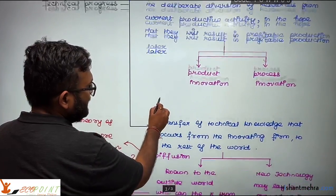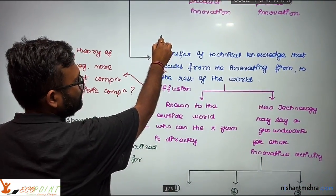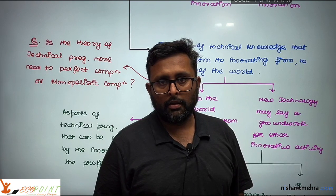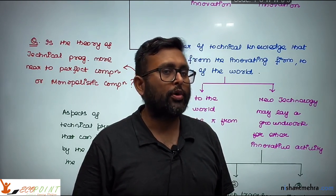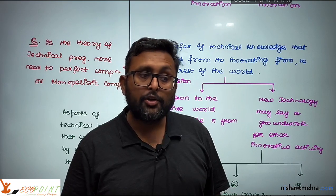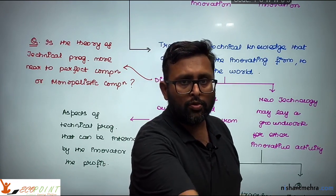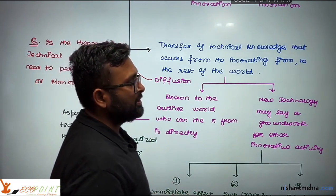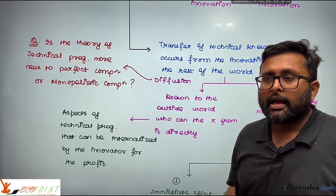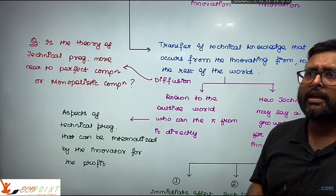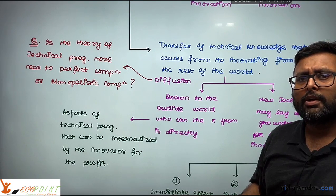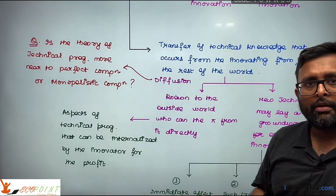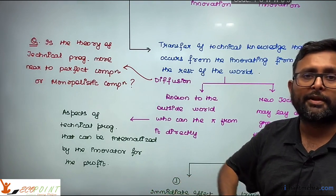Technical progress can also come through diffusion. My firm has done research and development, but that knowledge is not going to remain only with me — it is going to be diffused to other firms as well, and those firms are going to use this knowledge. Sometimes research is done not only for current profit but so that further research can be made better.